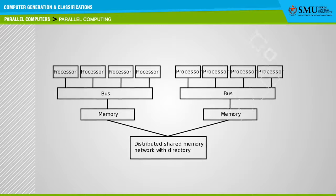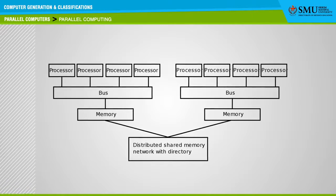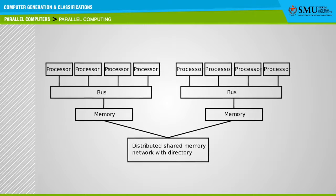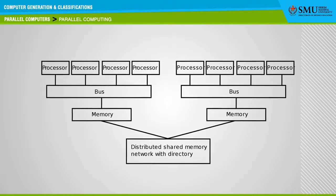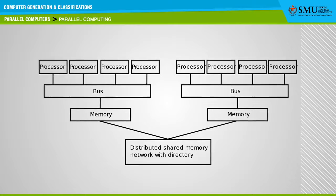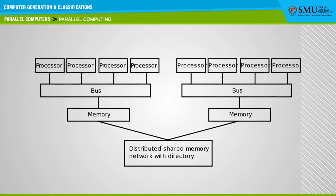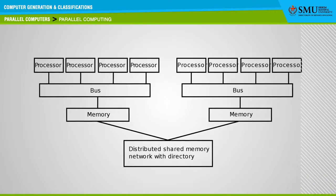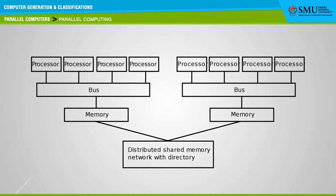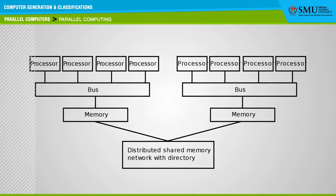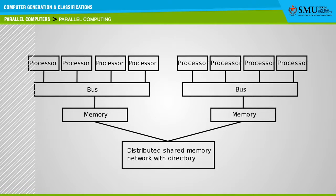Let us consider an example to understand the concept of parallel computing. Adding a number to all the elements of a matrix does not require the result of the previous element before summing the next element. Therefore, elements in the matrix can be made available to several processors. The results are obtained quicker than serial computing.